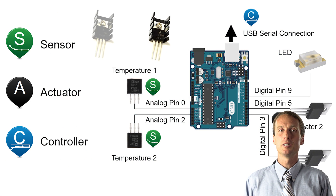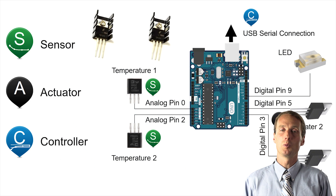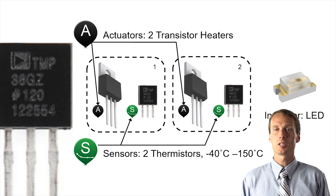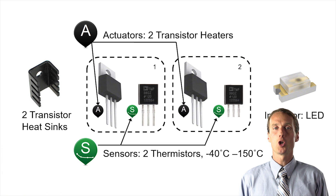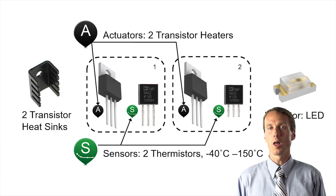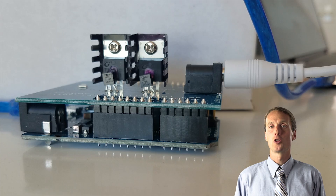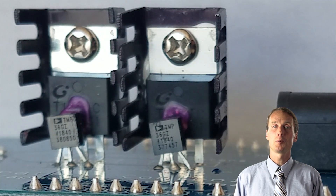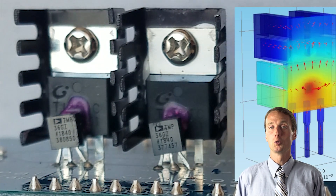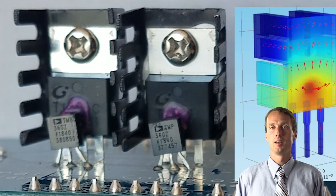Two heaters and an LED are adjusted with MATLAB or Python. Two temperature sensors show how much heat is transferred or lost. Thermochromic pigment turns pink when hot and black when it cools off.